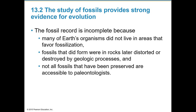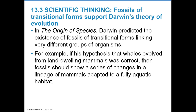In the Origin of Species, Darwin predicted the existence of transitional form fossils linking very different groups of organisms. For example, if his hypothesis that whales evolved from land-dwelling mammals was correct, then fossils should show a series of changes — transitional forms in a lineage of mammals adapting from a terrestrial to a fully aquatic habitat.